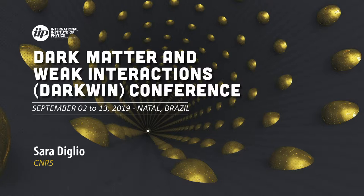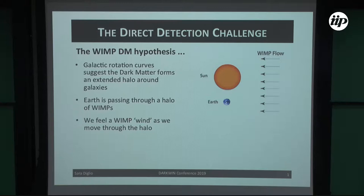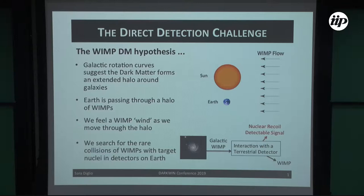Thanks to the presentations this morning, I will be very quick on the first slides. This is a terrestrial detector; the first goal is to search for WIMPs. We built our detector on Earth and search for the interaction of the WIMP with the target. The detectable signal corresponds to nuclear recoil — we measure the energy and try to extract our signal from possible backgrounds.